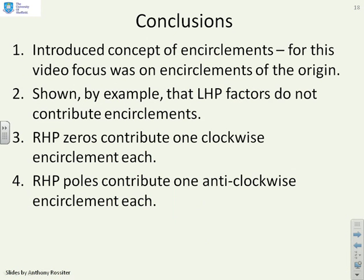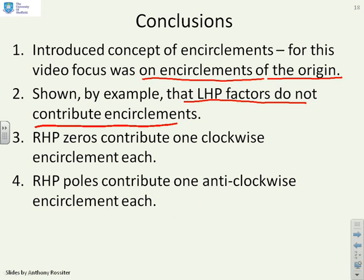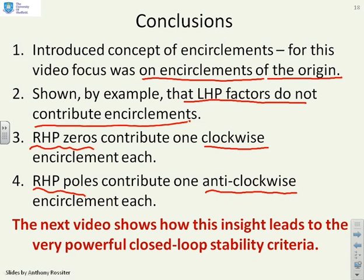So in conclusion, we've introduced the concept of encirclements, with the focus in this video on encirclements of the origin — that will change in the next video. We've shown by example that left half plane factors do not contribute encirclements, whereas right half plane zeros give a clockwise encirclement, and right half plane poles give an anticlockwise encirclement. The next video will show how this insight can be used to give a very powerful closed-loop stability criterion.